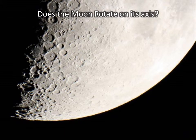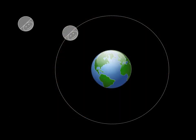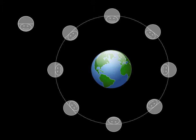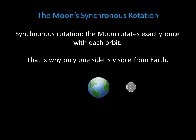You've probably noticed that we see the same face of the Moon all of the time. This may make it seem like the Moon doesn't rotate, but the Moon does rotate. In this overhead view of the Earth and Moon, the smiley side of the Moon is the side we always see. Watch what happens to the orientation of the smiley face as the Moon orbits Earth — the smiley face makes one full rotation. The Moon rotates exactly once with each orbit, and this is why only one side is visible from Earth. This rotation is called synchronous rotation.